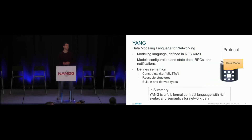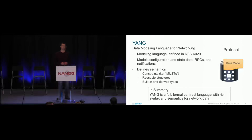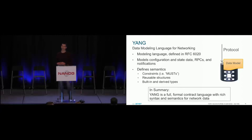What is Yang? It's a data modeling language built specifically for networking and for network data. What it's going to do is take you away from that string manipulation, wild-west CLI type of definition of network data and give you a well-defined, formal contract of what your network data looks like. It has things built into it like constraints and reusable types. It's very modular — one Yang model can encapsulate another. A lot of concepts came out of object-oriented programming and are taken advantage of by Yang.